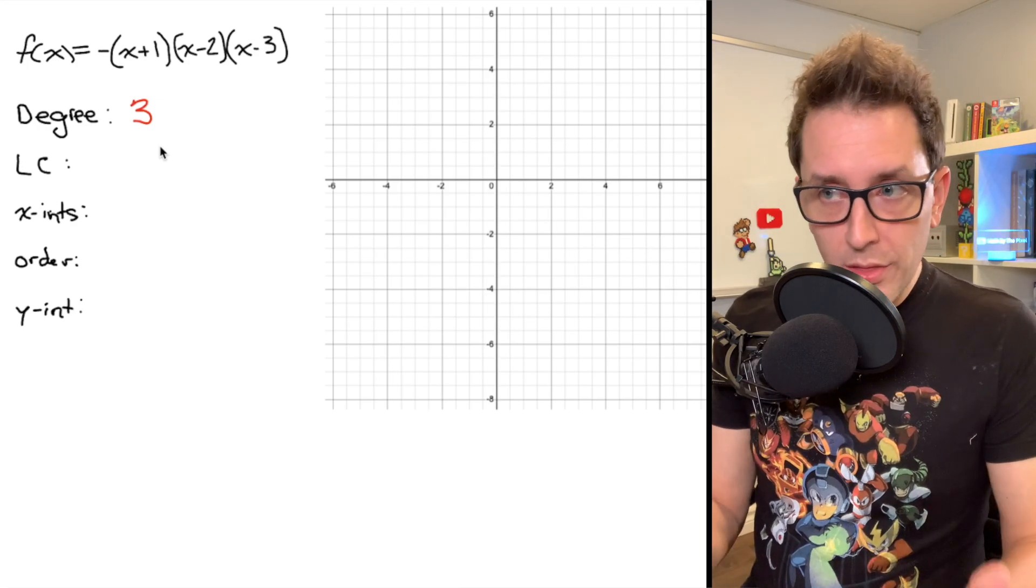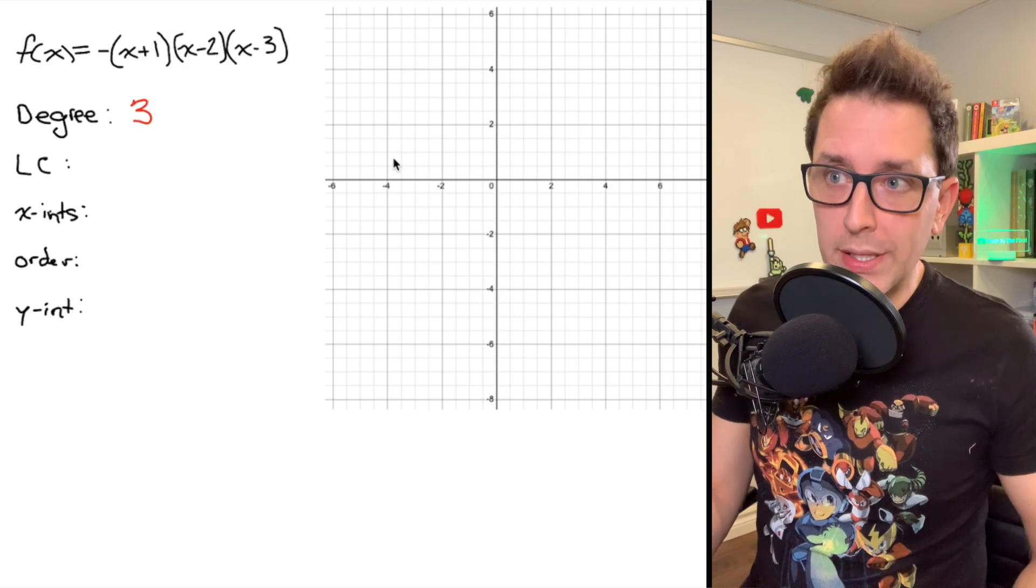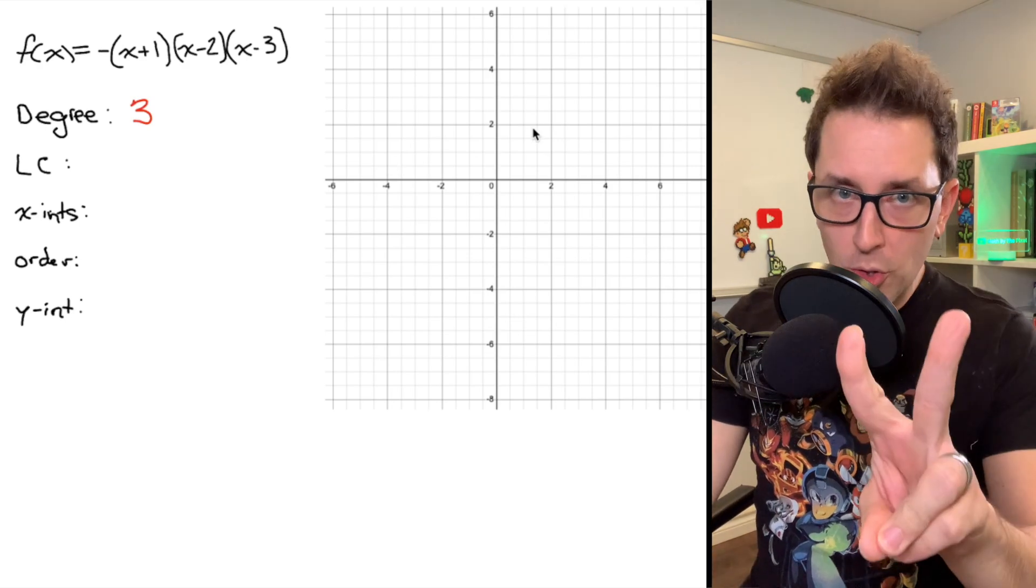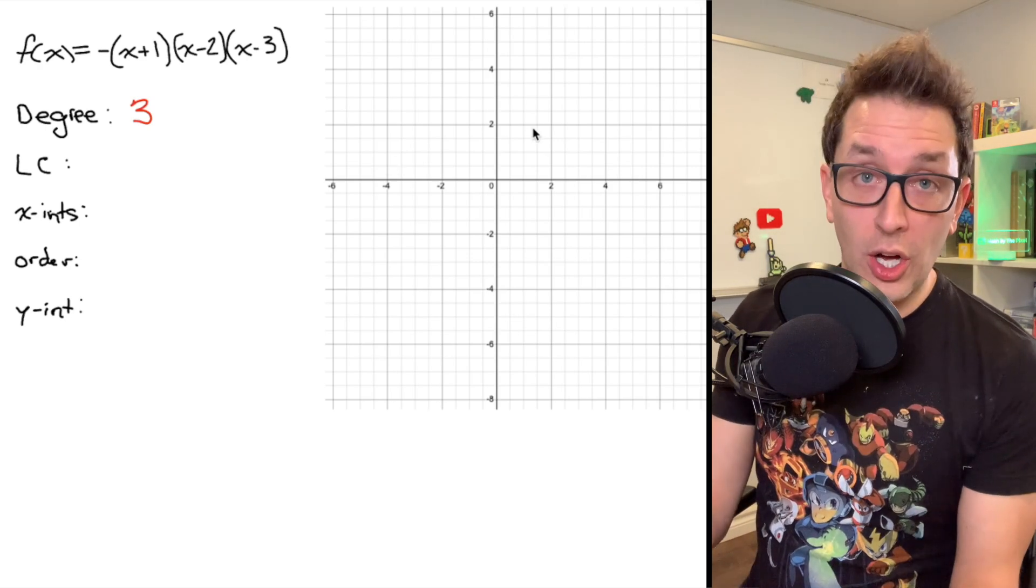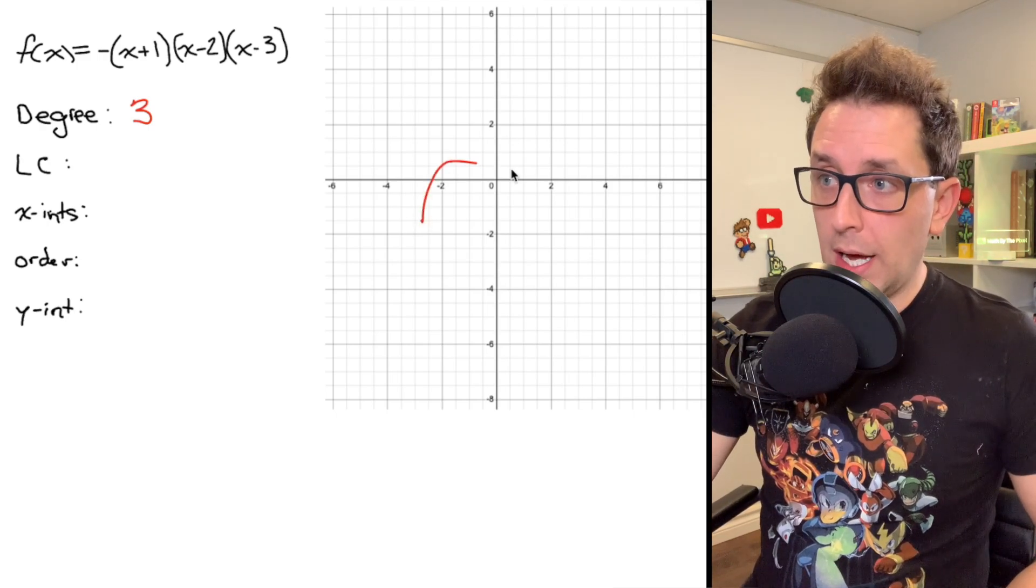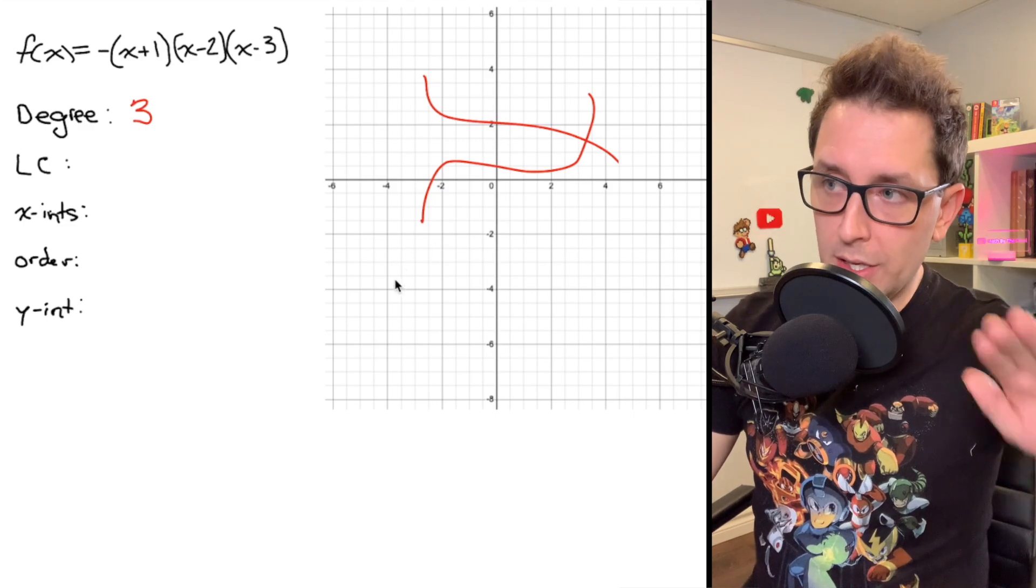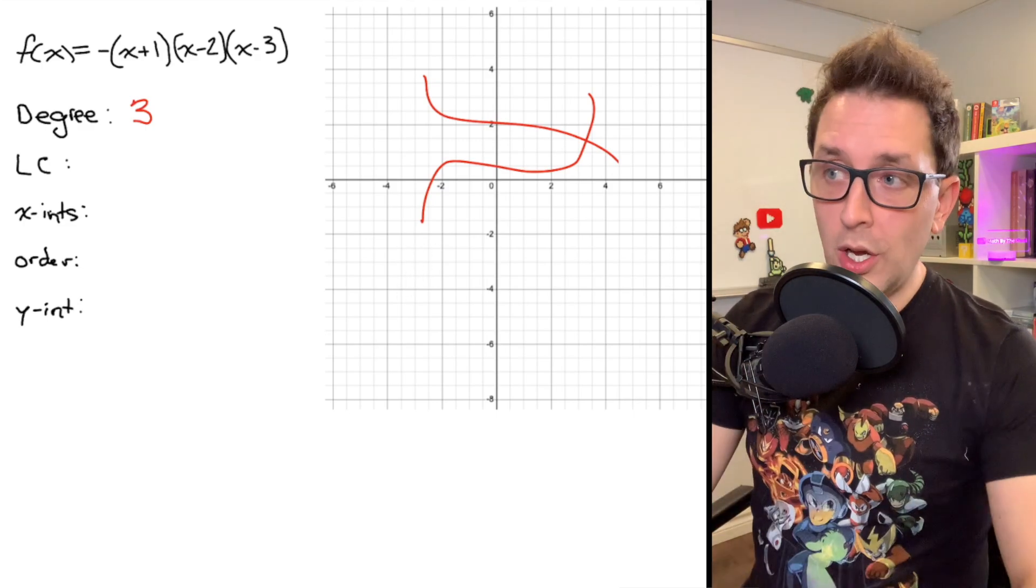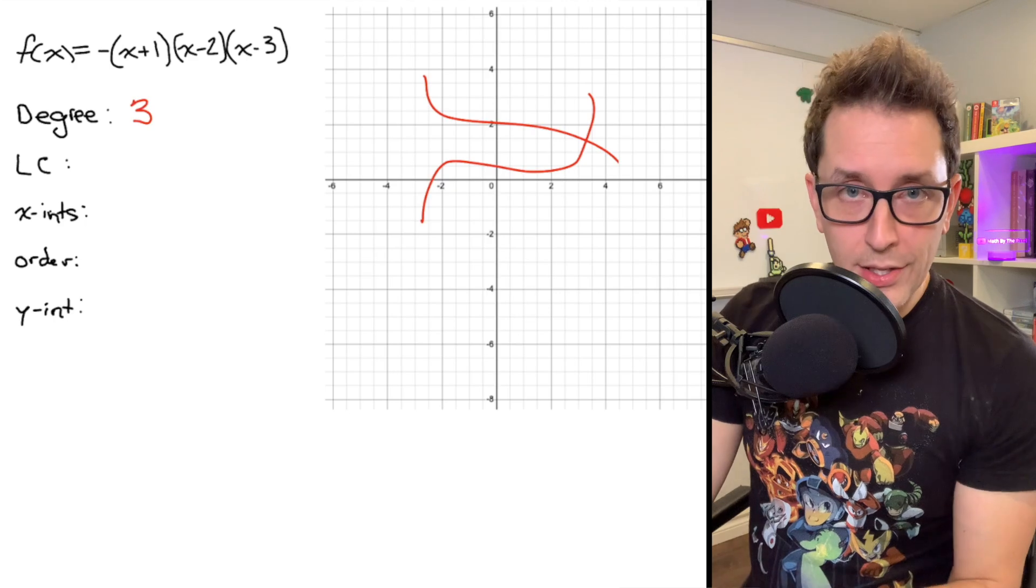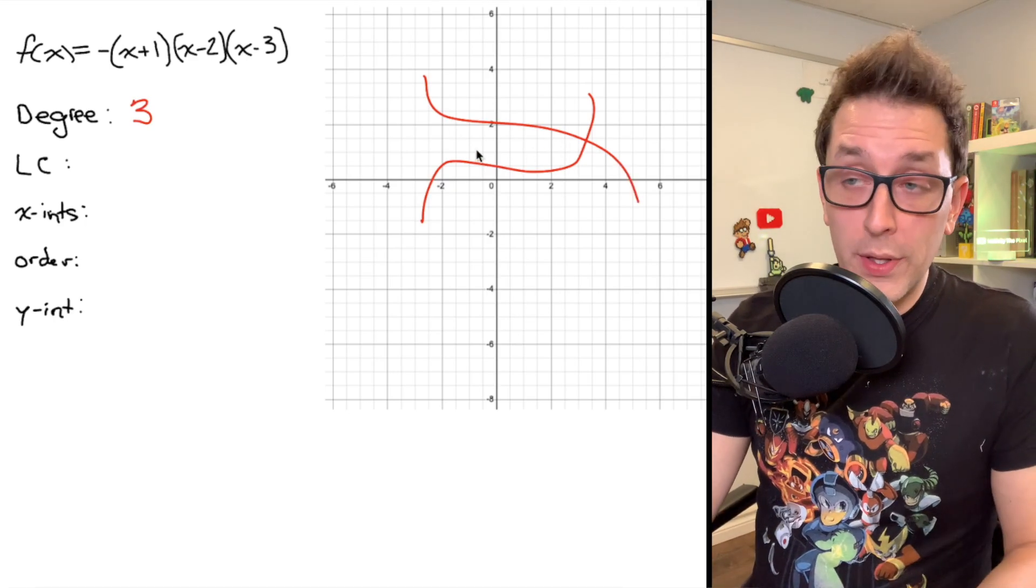Now if you've ever seen a degree 3 polynomial before, they all kind of have a similar shape. A degree 3 polynomial is a cubic function, and there's two possible ways a cubic can look on a graph. You've probably seen cubics that look either something like this, or something like this. They either start in quadrant 3 and end in quadrant 1, or they start in quadrant 2 and end in quadrant 4.